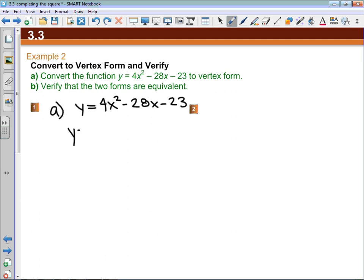So I am going to write this. I'm going to factor that 4 out of anything that has an x in it. So 4x squared divided by 4 is x squared. Negative 28x divided by 4 is negative 7x. And then we'll leave the 23 alone.